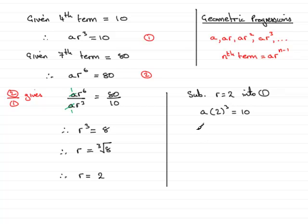2 cubed is 8, so therefore 8A equals 10. Divide both sides by 8.